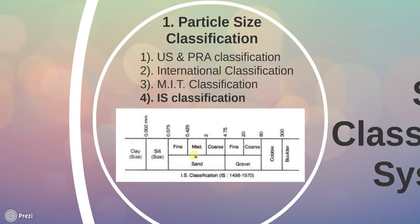If the size of particles is in the range of 0.075 mm to 4.75 mm then they are called sand. Within sand, if they are between 0.075 to 0.425 mm they are fine sand, if 0.425 mm to 2 mm they are medium sand, and if they are of size 2 mm to 4.75 mm they are coarse sand.